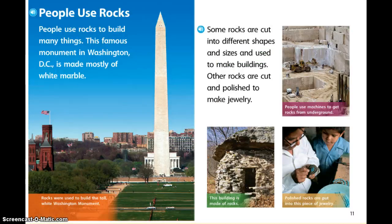People use rocks to build many things. This famous monument in Washington DC is made mostly of white marble. Rocks were used to build the tall white Washington Monument. Some rocks are cut into different shapes and sizes and used to make buildings. Other rocks are cut and polished to make jewelry. People use machines to get rocks from underground. This building is made of rocks, and polished rocks are put into this piece of jewelry.